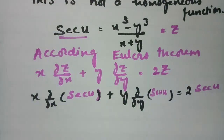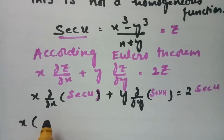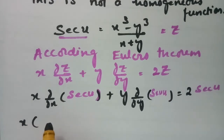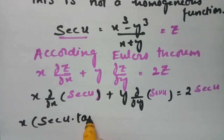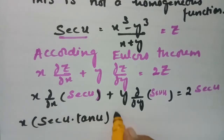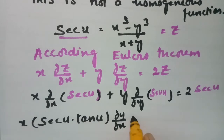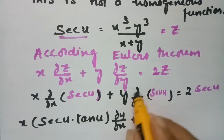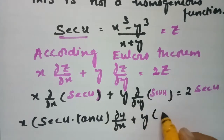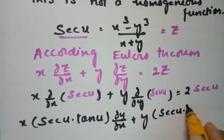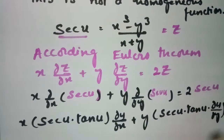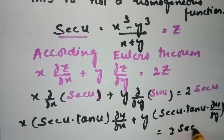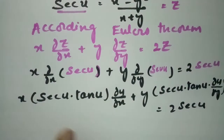Taking the derivative of secant u with respect to x gives secant u tan u into ∂u/∂x, and with respect to y gives secant u tan u into ∂u/∂y, and this equals 2 into secant u. Now I will take secant u common.